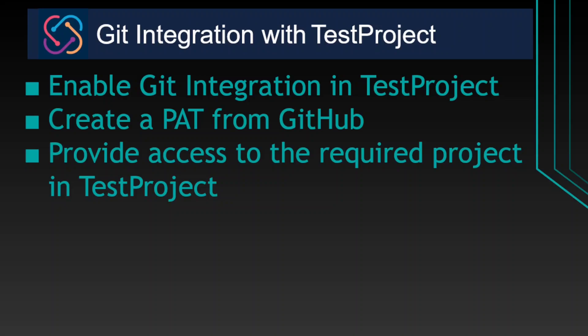So for easy maintenance and version controlling, we need to integrate TestProject with Git. The steps we need to perform are: first, enable Git integration in TestProject; second, create a personal access token from GitHub to use while integrating with TestProject; and I'm going to show you how to create a personal access token and then use it while integrating Git with TestProject.